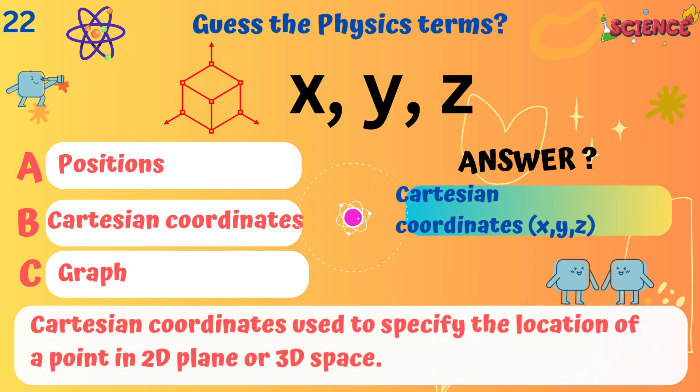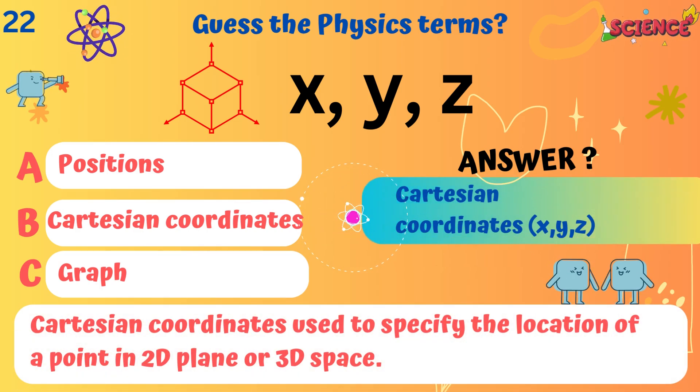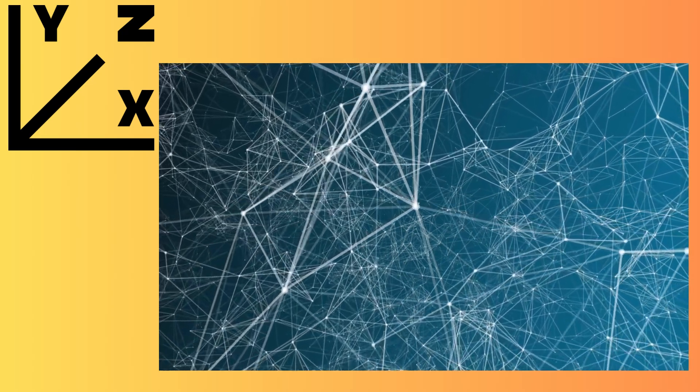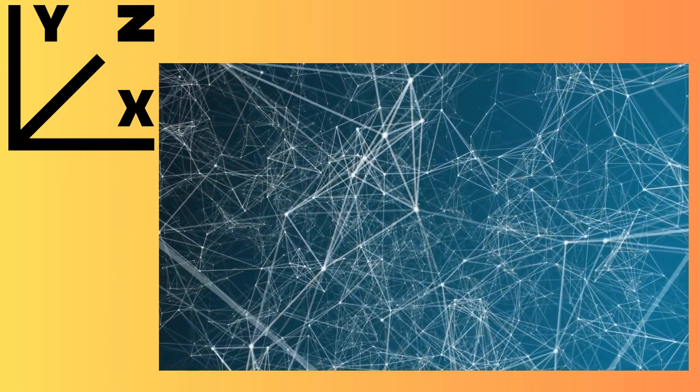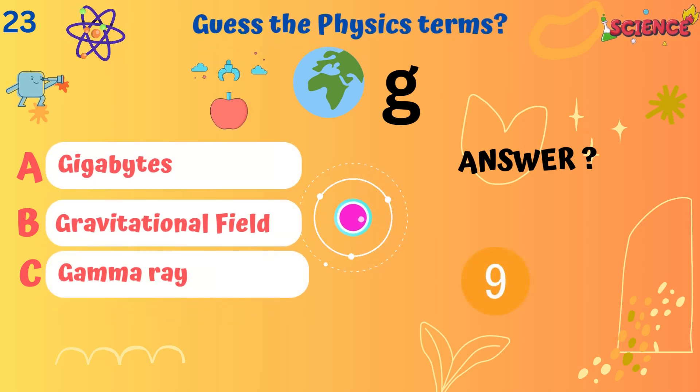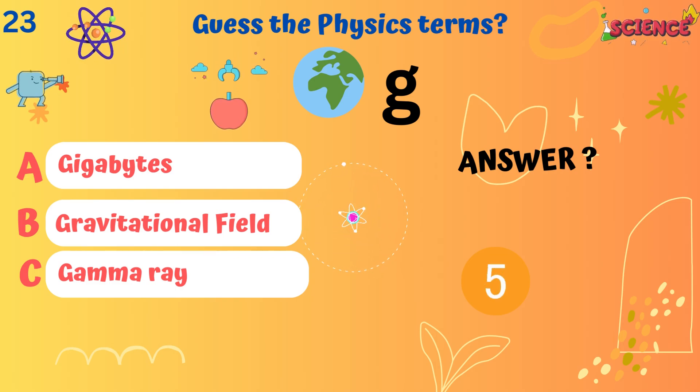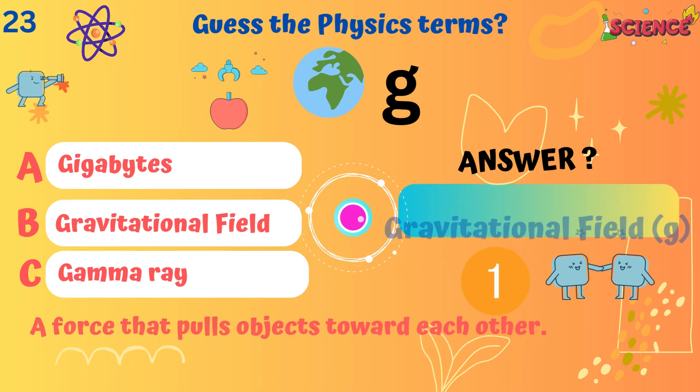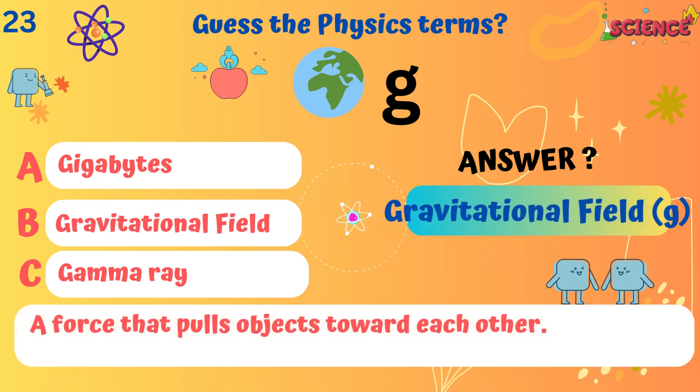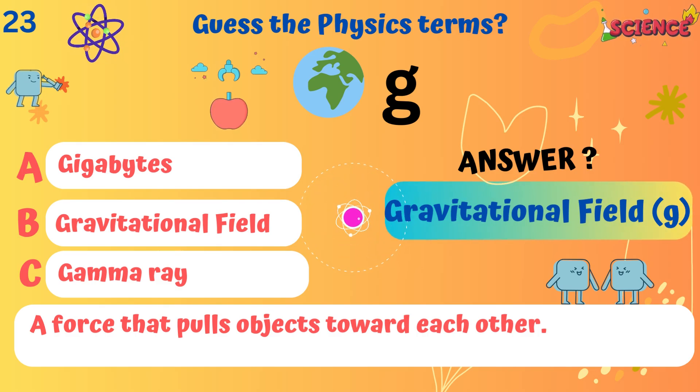Cartesian coordinates. Cartesian coordinates used to specify the location of a point in 2D plane or 3D space. Gravitational field. A force that pulls objects toward each other.